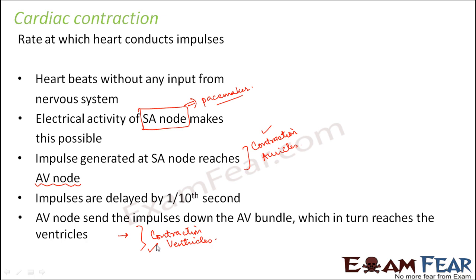It is not only the nodal tissues which play a role in the process of heartbeat — it is a combined effort of the nodal tissues as well as the valves, because the valves should also open and close at the right time. So the valves, the nodal tissues, as well as the blood vessels all together actually contribute to the functioning of the heart.